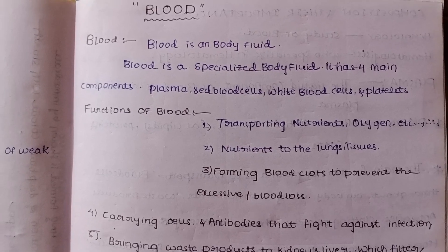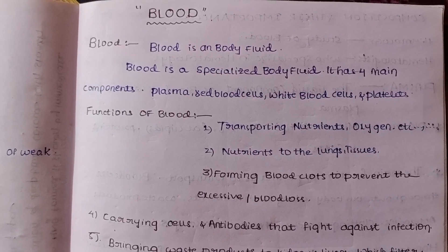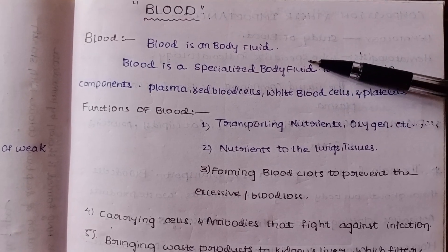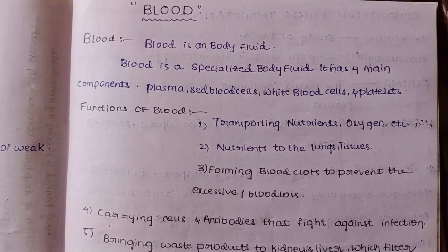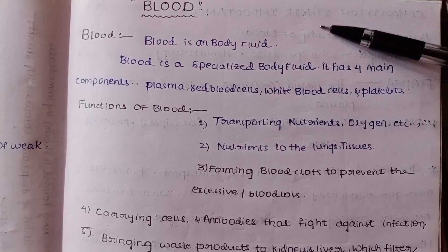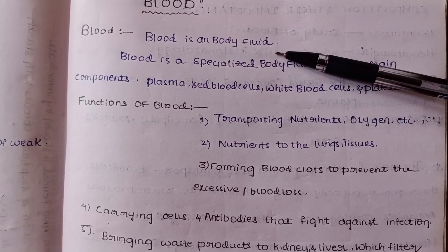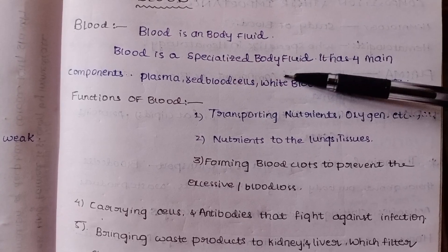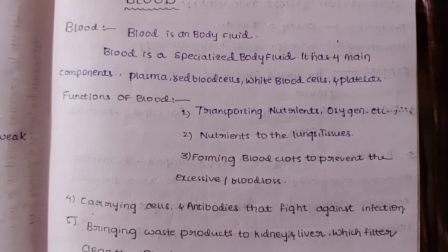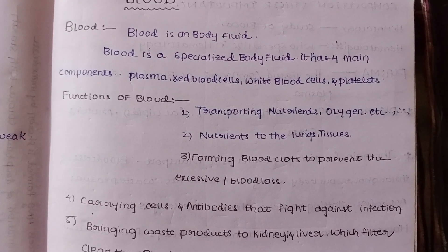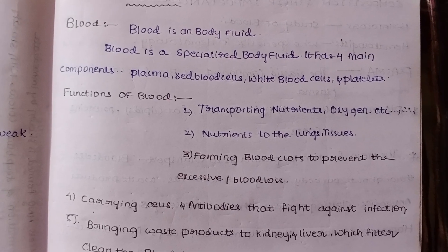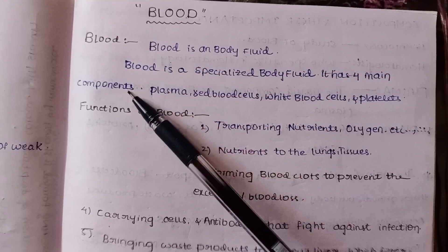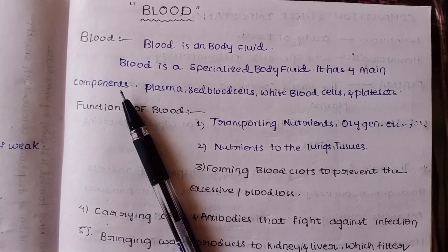So first, the definition of blood: blood is a specialized body fluid. It is a specialized body fluid that has four main components.